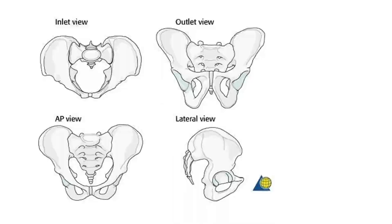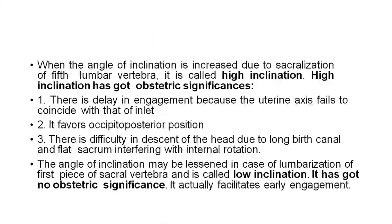This is the inlet view and the outlet view — the pictures show the anteroposterior view and lateral view. When the angle of inclination is increased due to sacralization of the fifth lumbar vertebra, it is called high inclination. High inclination has obstetric significance: it delays engagement because the uterine axis fails to coincide with that of the inlet, it favors the occipitoposterior position, and there is difficulty in descent of the head due to the long birth canal and flat sacrum interfering with internal rotation.